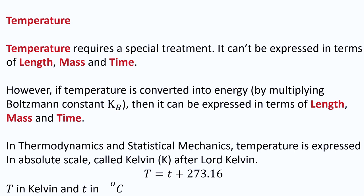In thermodynamics and statistical mechanics, temperature is expressed in the absolute scale named after Kelvin — note that it is simply 'Kelvin,' not 'degree Kelvin,' though other scales like centigrade and Fahrenheit use 'degree.' The conversion is: T (in Kelvin) = t (in °C) + 273.16. So whatever temperature you have in degrees centigrade, add 273.16 to get the temperature in the Kelvin scale.